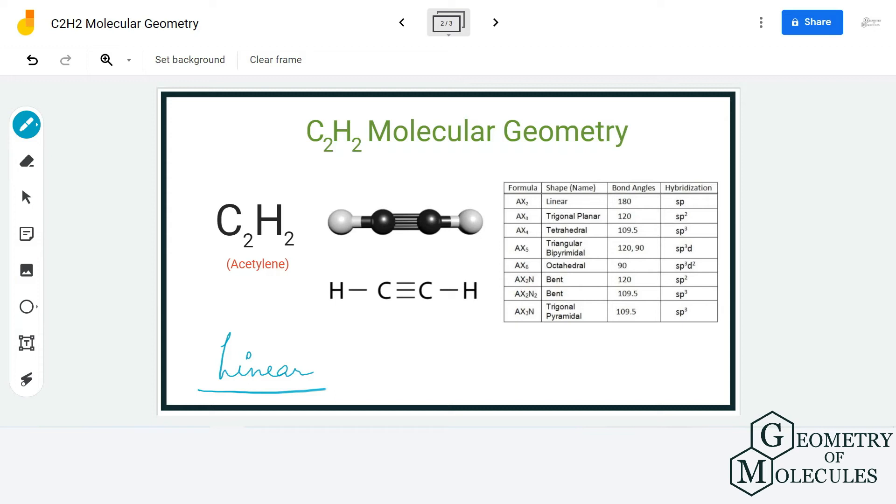There are two units attached to it: one is this hydrogen atom and the other one is this carbon and hydrogen unit. So the notation for C2H2 becomes AX2, and if you refer to this table, it says that molecules with AX2 notation have linear molecular geometry.